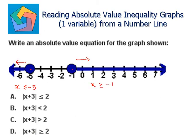Take the halfway middle point. m is equal to negative 5 plus negative 1 divided by 2, that's negative 6 divided by 2, that's negative 3. So from these two solutions on both sides, subtract negative 3.